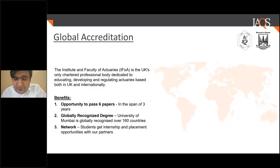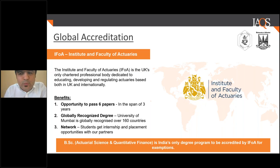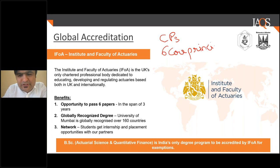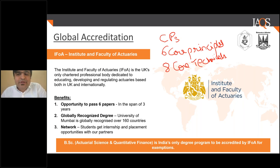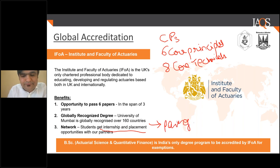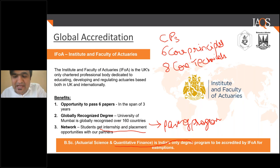This is the only program in India recognized by the IFOA for exemptions. If you score well, you will be exempt from all six core principles under the new 2019 curriculum, or eight core technicals under the earlier curriculum. You get a globally recognized University of Mumbai degree, an IFOA accreditation exempting you from six papers, and an entire network for internships and placements, which are part of the program.